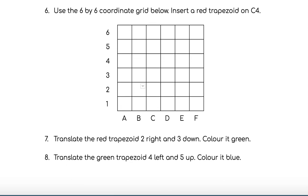For question 6, you'll be using the coordinate grid below and inserting a red trapezoid on C4. Your first step is to find the location of C4 and then draw a red trapezoid in that space.